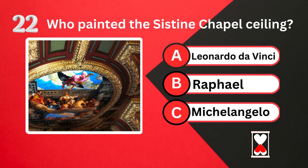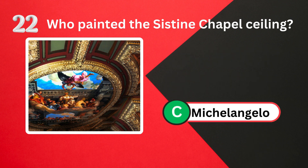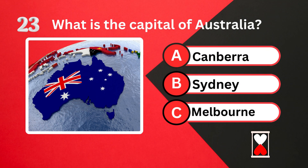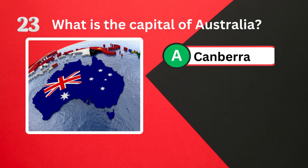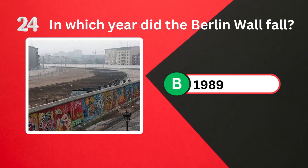Who painted the Sistine Chapel ceiling? What is the capital of Australia? In which year did the Berlin Wall fall? 1989.